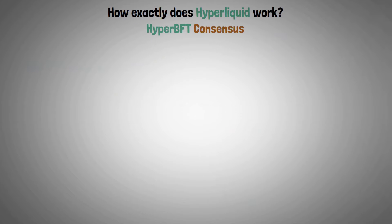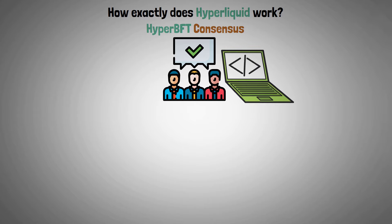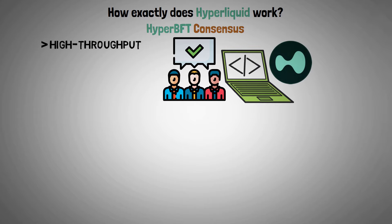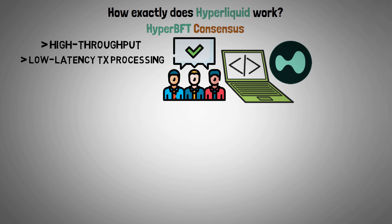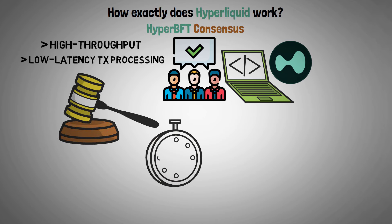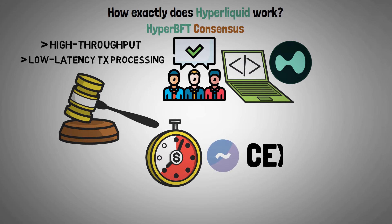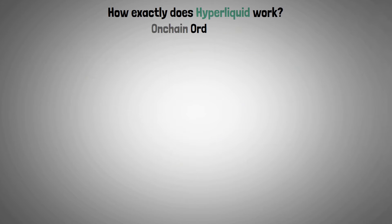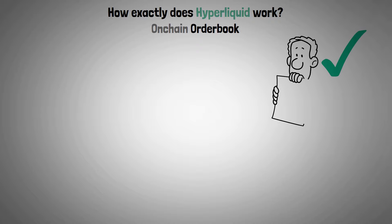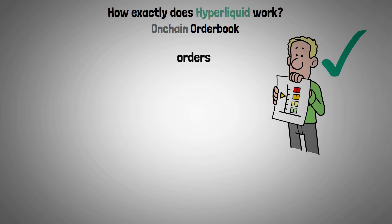HyperBFT consensus — the consensus algorithm developed specifically for Hyperliquid — guarantees high throughput and low latency transaction processing. The ensuing trade settlements are almost as quick as those typically experienced by centralized exchanges.